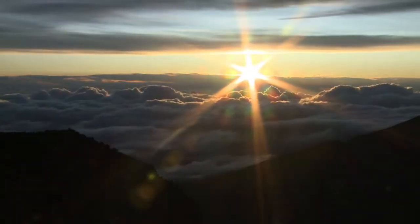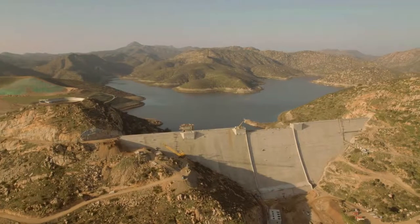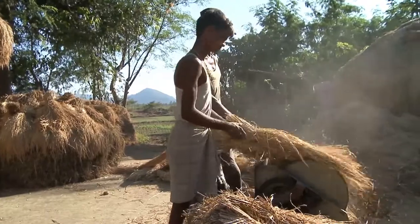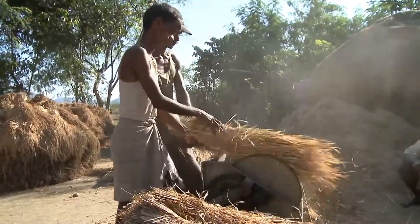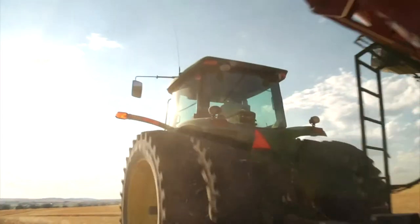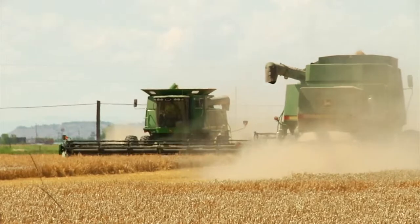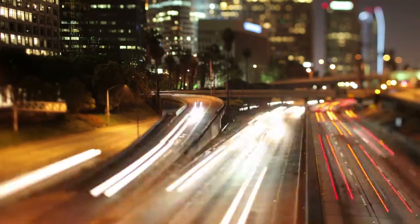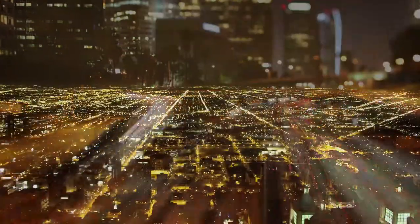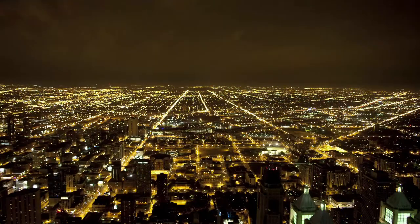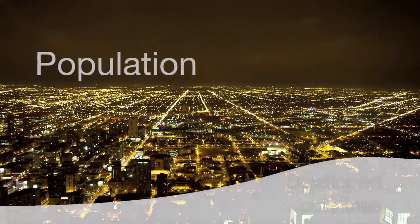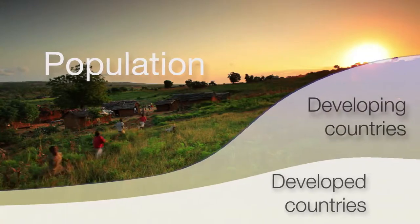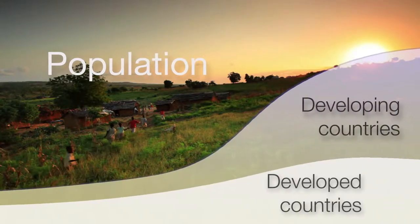We all require air, water, food, energy, and other resources. But people in different countries impact the environment in different ways. People in the developed world tend to use more fossil fuel energy and other resources that potentially cause greater harm to the natural environment. While the human population in the developed world has stopped growing, the population in the developing world continues to grow.